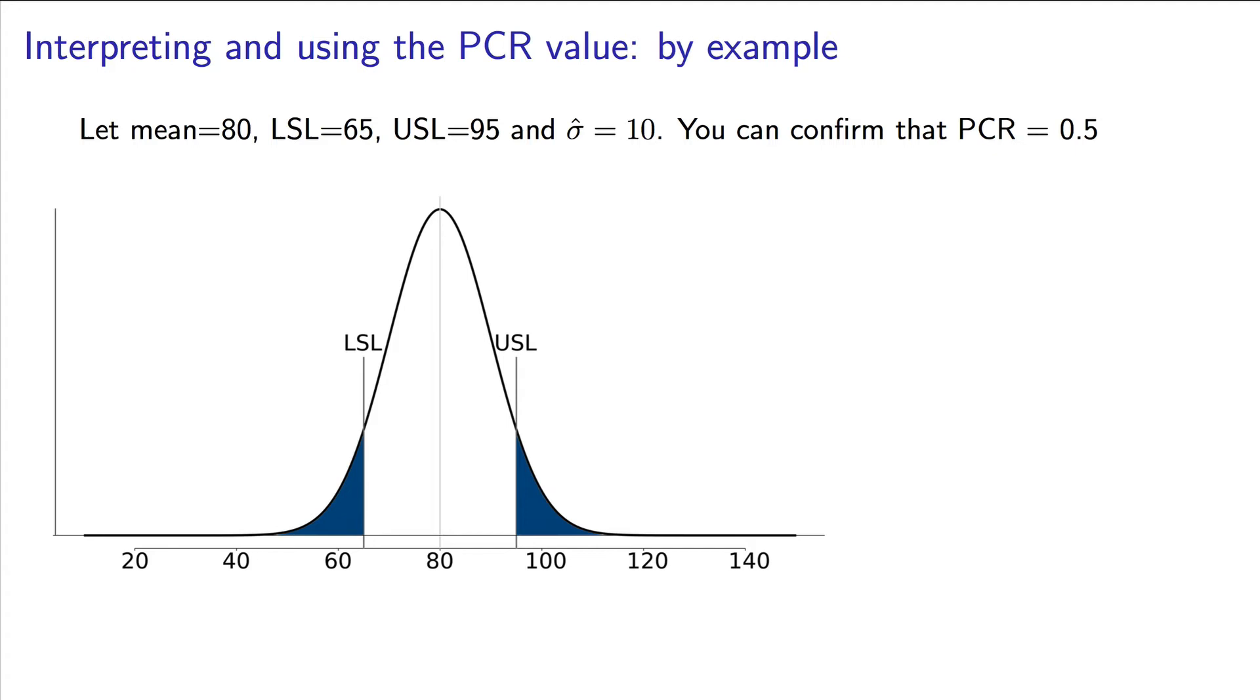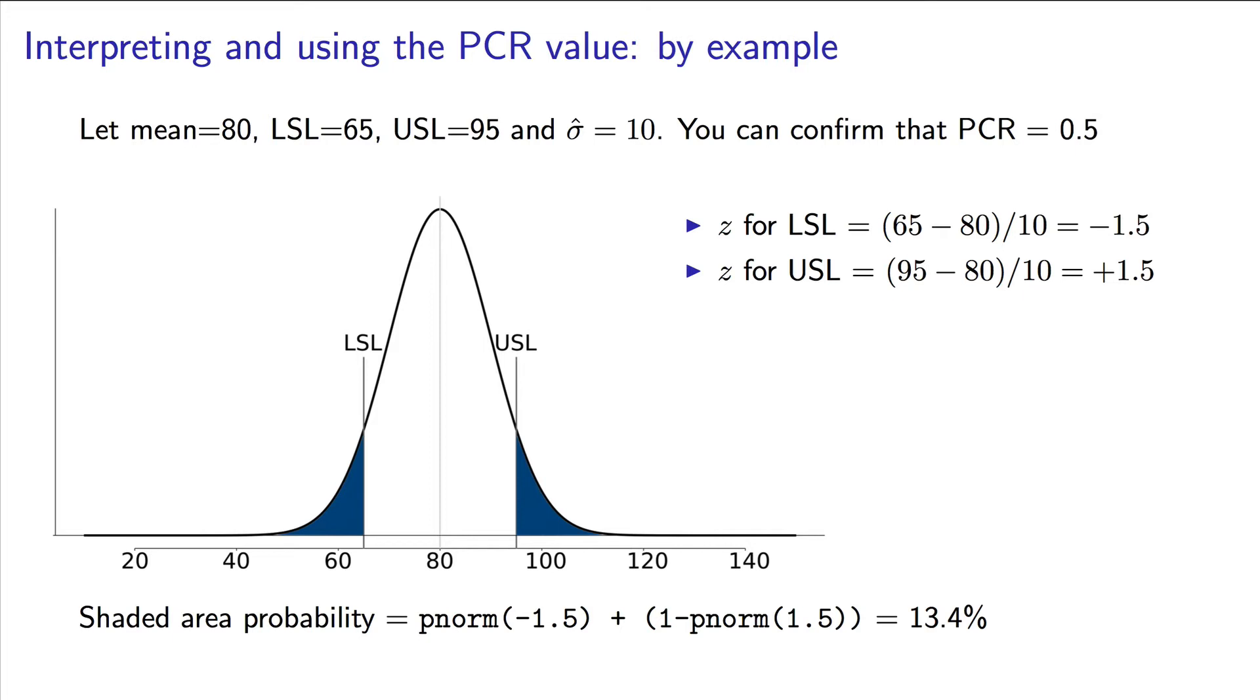And I've emphasized the region below the lower spec limit and the region above the upper spec limit. That's a lot of area that's shaded, indicating a lot of the product we're producing on our process is outside specification. This is actually a really bad process, a PCR of 0.5 is very undesirable. In fact, under the assumption of normal distributions, we can calculate the z value for the lower spec limit and the upper spec limit. You should have found values of plus and minus 1.5. And using the pnorm function, or looking this up on tables, we will find that 13.4% of our process production is outside the limits. That's 13.4% of our product that we are not able to pass on to our customers because they don't meet specification.